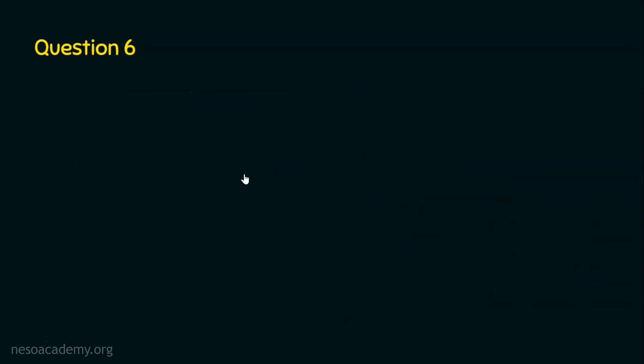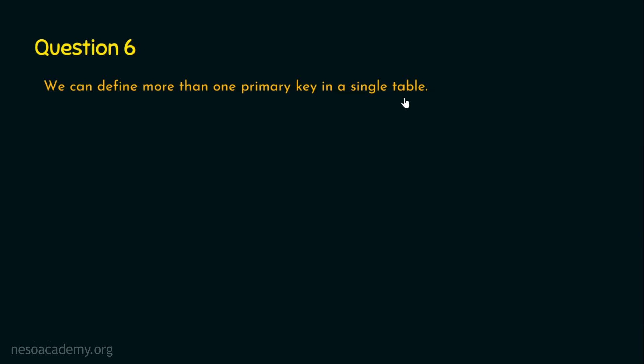Question number six is a true or false question: we can define more than one primary key in a single table. The right answer is false. We cannot define more than one primary key in a single table. A table may have multiple candidate keys, but only one of them is chosen as the primary key.